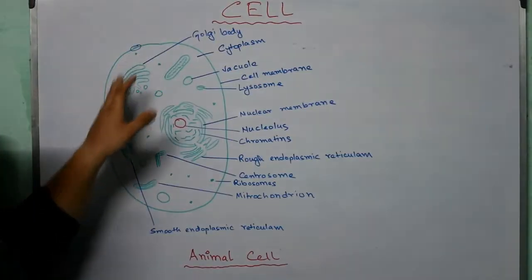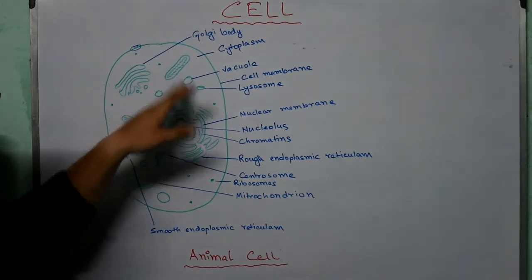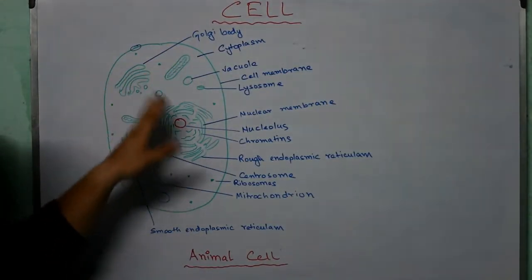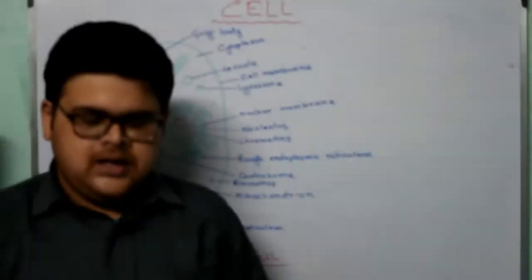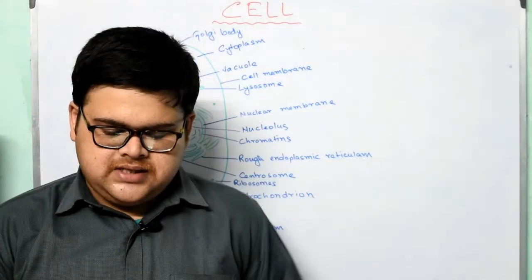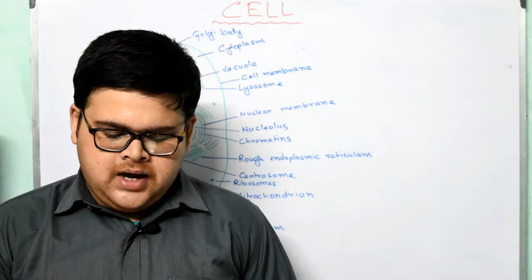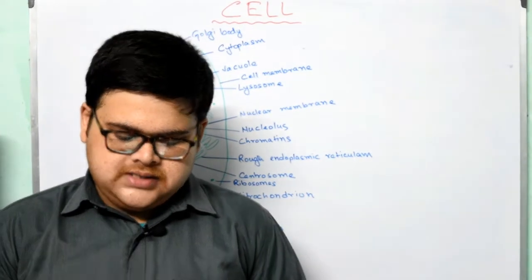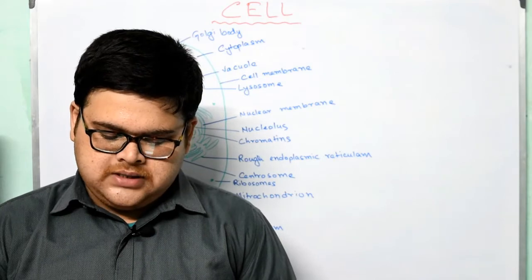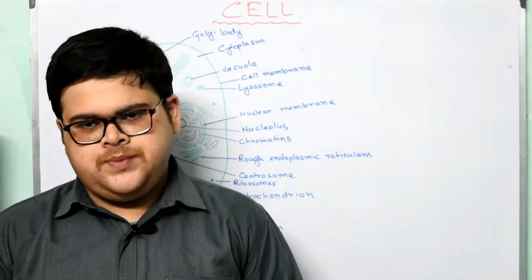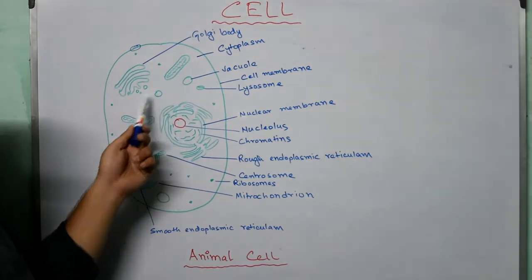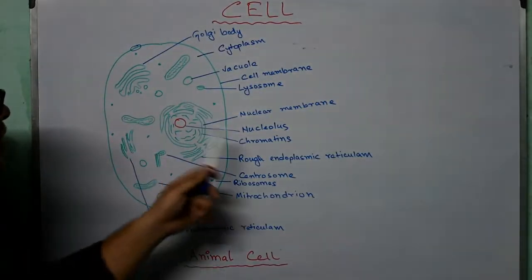Cell organelles — whatever is present inside a cell is known as a cell organelle. Cell organelles are the living membrane-bound bodies that have a definite shape and function within the protoplasm. Whatever is inside the protoplasm, these are known as cell organelles.